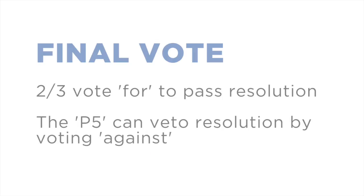Now we're going to be moving to a vote on the resolution as a whole. A reminder that on the final vote you need a two-thirds majority, and you can vote for, against, or abstain. A reminder that the P5 have veto power, so if they vote against, the resolution will not pass. In the final vote, it needs two-thirds of the chamber to vote for in order to pass. Also, the five permanent members of the Security Council — China, France, Russia, the UK and the US — can veto the resolution by voting against. So even if everyone else voted for, if just one P5 country vetoes, the whole resolution crashes and burns.